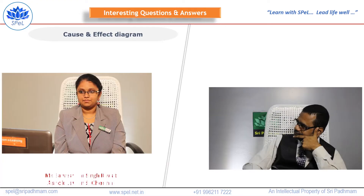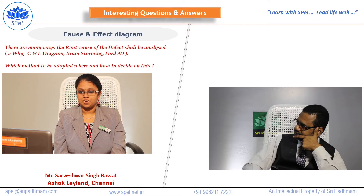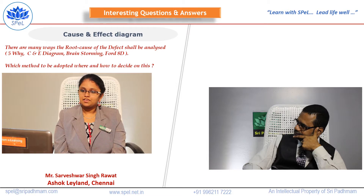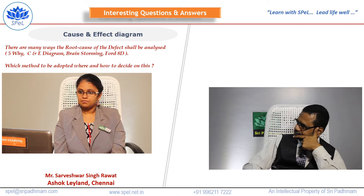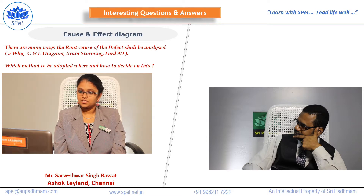Cause and effect diagram. This question is put forth by Mr. Sarmeshwar Singh Ravad, Ashok Leyland, Chennai. The question is: there are many ways the root cause of a defect shall be analyzed — examples include 5 Why, cause and effect diagram, and brainstorming. Which method to be adopted, where, and how to decide on this?